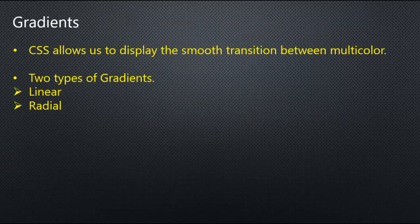CSS gradients allow us to display smooth transitions between multiple colours. There are two types of gradients: Linear and Radial.